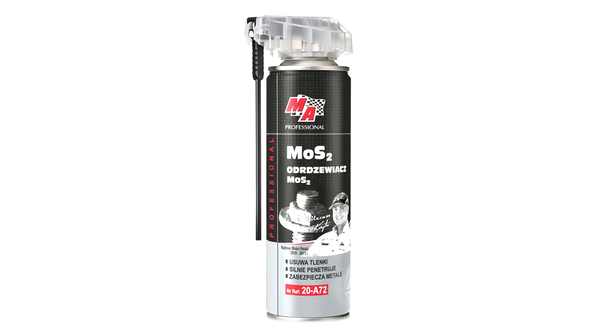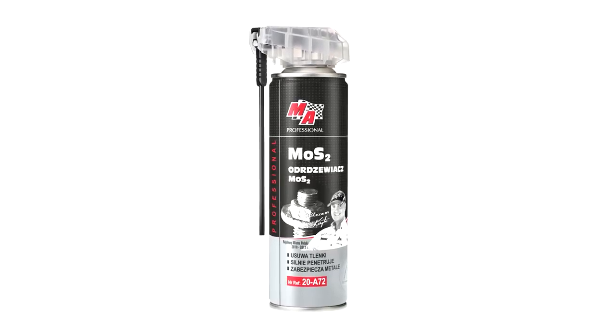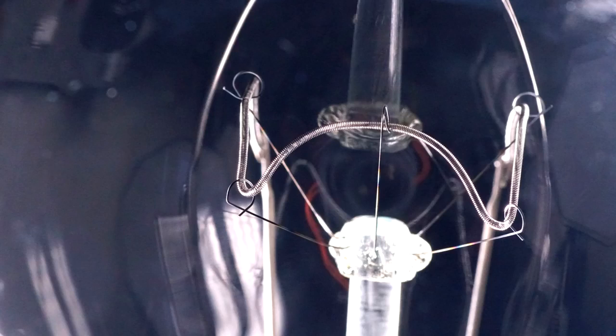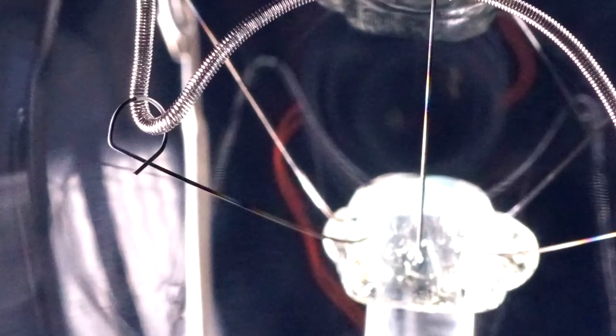Molybdenum disulfide is used as an excellent lubricant for machine elements. Because of having a high melting temperature, this metal is also used in the production of incandescent light bulbs to make support wires for tungsten filaments.